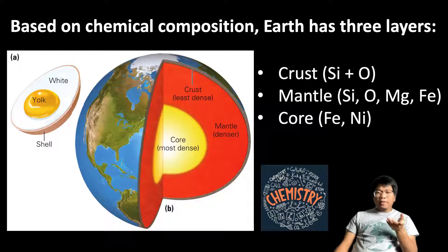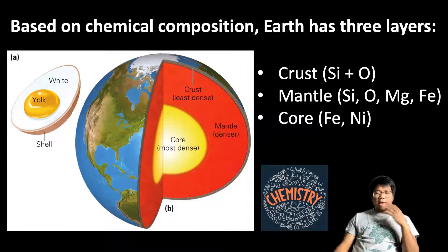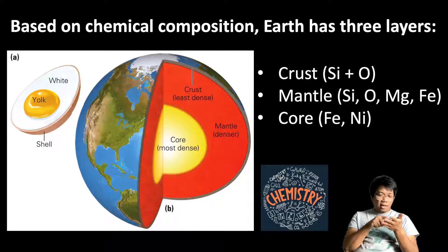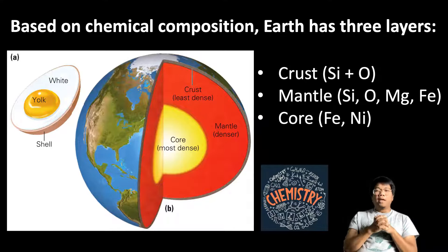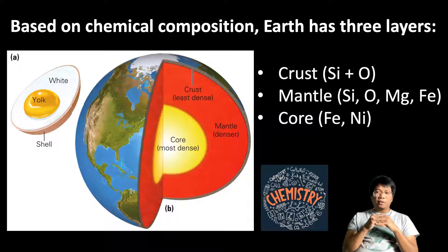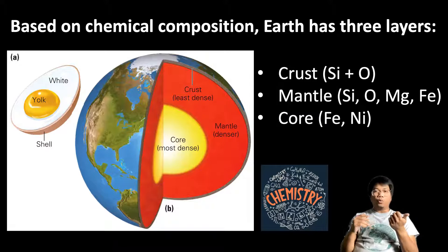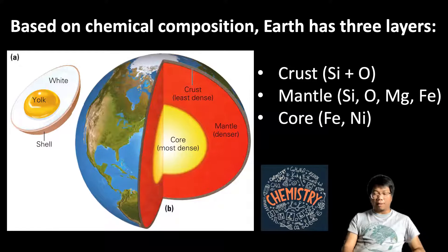One way to remember this concept easily is to imagine that if you had a boiled egg and sliced it open, you would find the yolk right in the middle of the egg. Right outside of it, we have the white of the egg that blankets the yolk. And then we have a thin layer of shell that protects the egg. That configuration looks very similar to the Earth's layers — the yolk represents the core, the white represents the mantle, and the thin shell represents the thin crust that we have on Earth.